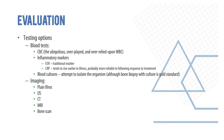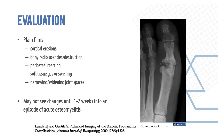X-rays, ultrasound, and CT are the imaging modalities to be done. If you're suspecting a hematogenous source or considering a tumor as a differential, consider a bone scan. Plain X-rays can show cortical erosions, radiolucencies, destruction, periosteal reaction, soft tissue gas or swelling, and narrowing of joint spaces. However, in acute osteomyelitis it may take one to two weeks or longer to see changes on X-ray, so clinical suspicion and thorough history and physical examination are key.